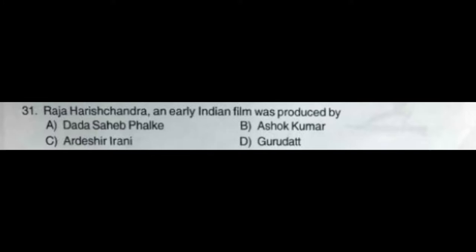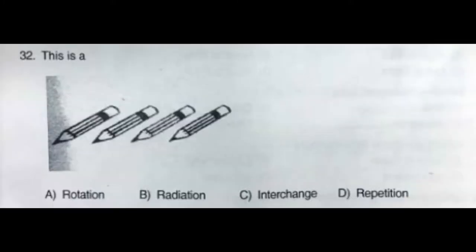Question number thirty-one: Raja Harishchandra, an early Indian film, was produced by — option A: Dadasaheb Phalke, option B: Ashok Kumar, option C: Ardeshir Irani, option D: Guru Dutt. The correct answer is option A: Dadasaheb Phalke.